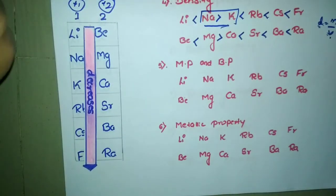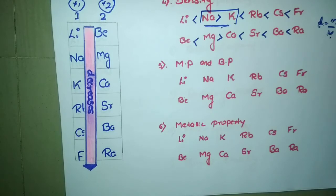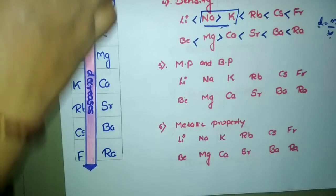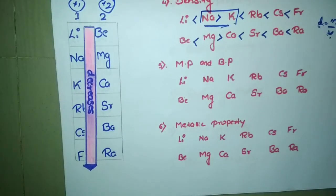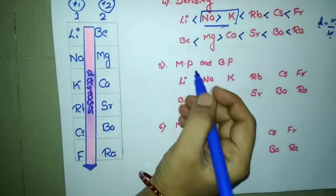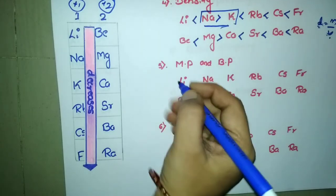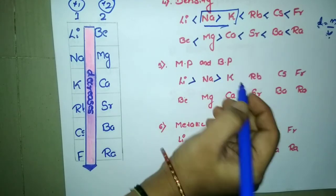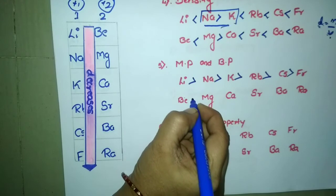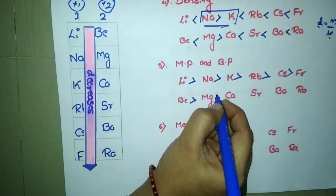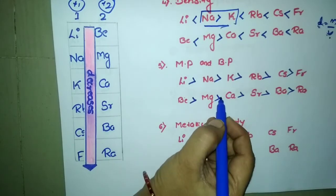For group 2 elements, the charge is +2, meaning there are two electrons in the valency shell, forming a strong metallic bond between the nucleus and the outermost electrons. More temperature is needed to break that bond. However, within each group, as we go down, the melting point and boiling point decrease. The trend for group 1: lithium > sodium > potassium > rubidium > francium. Similarly for group 2: beryllium > magnesium > calcium > strontium > barium.